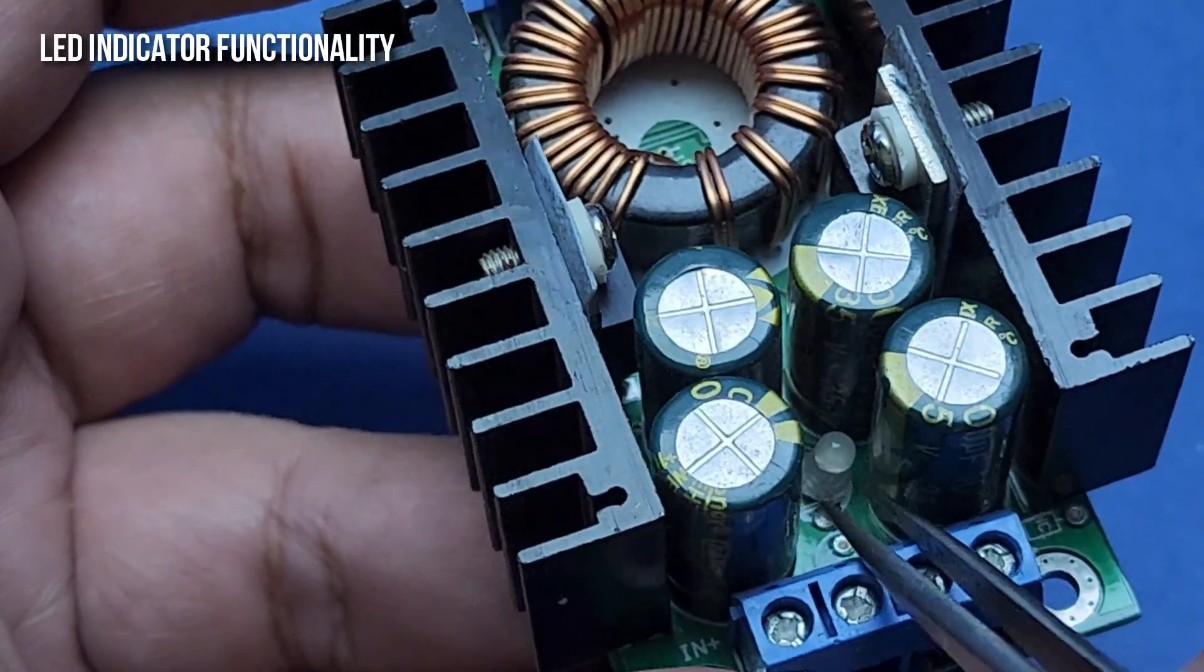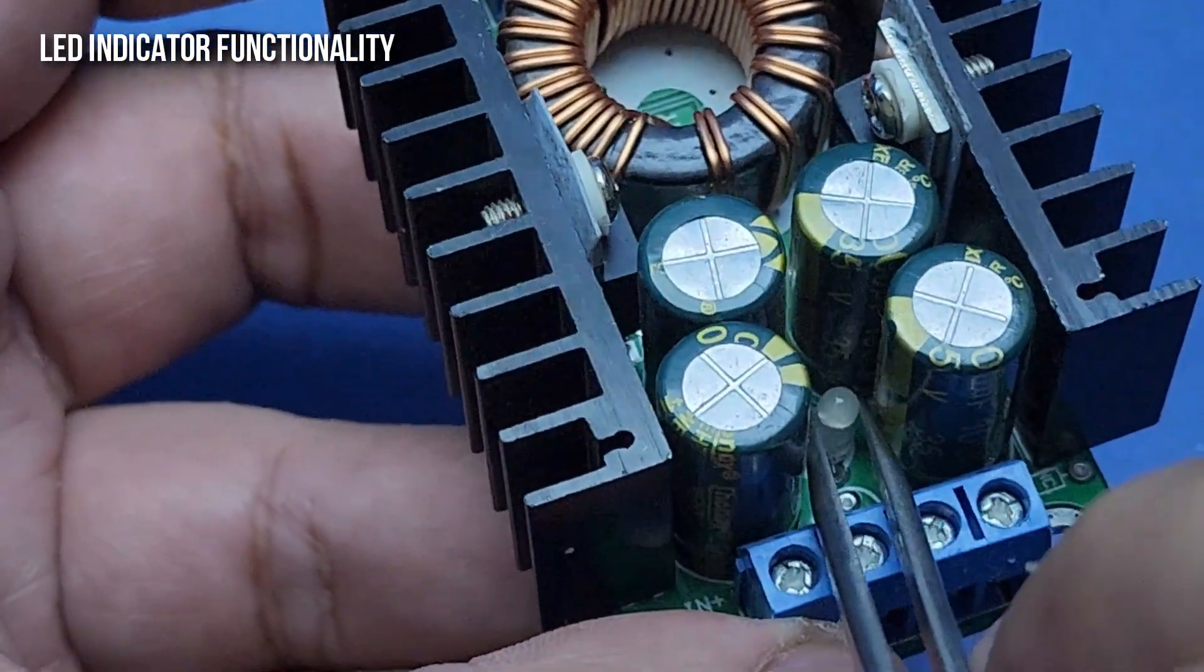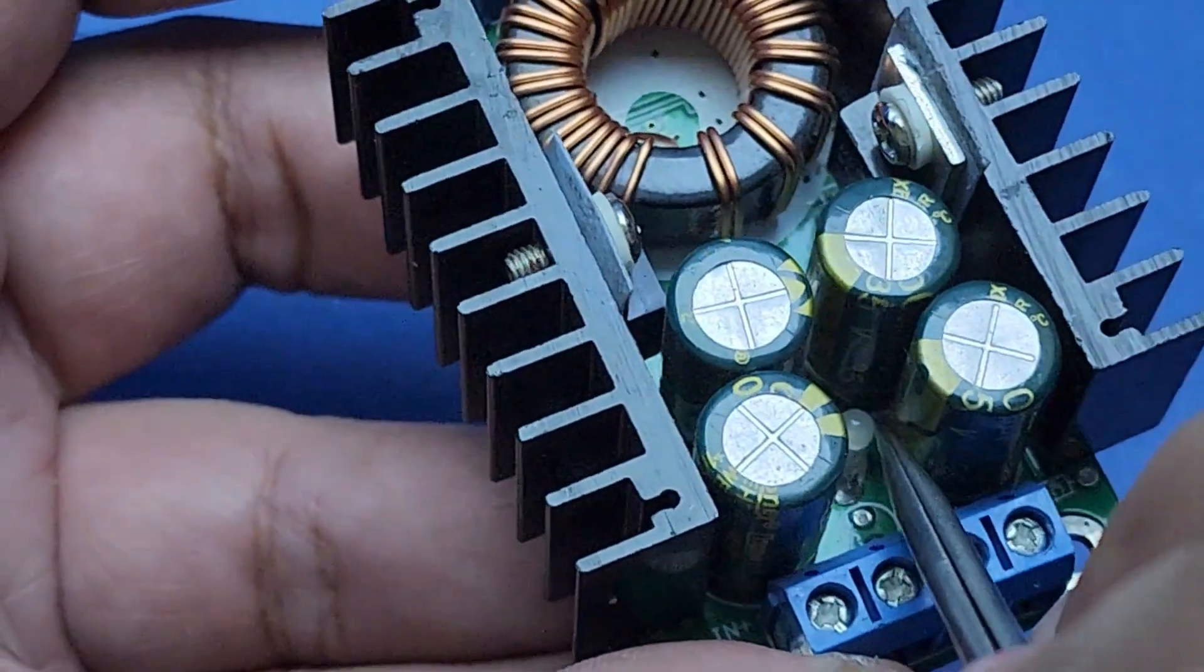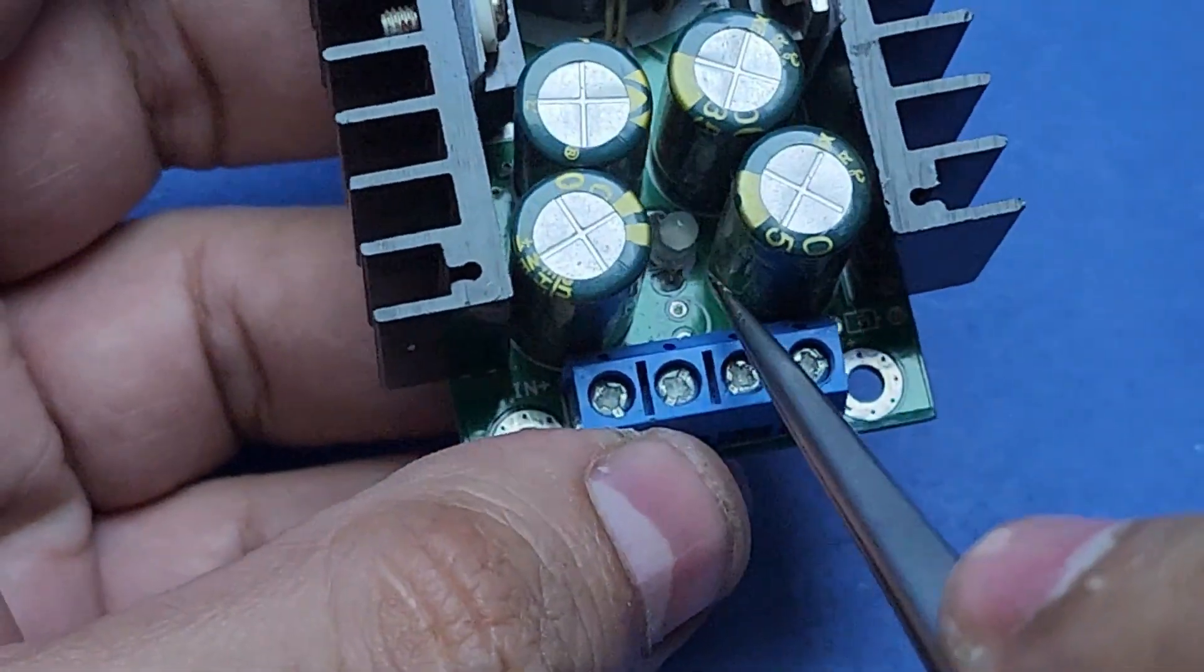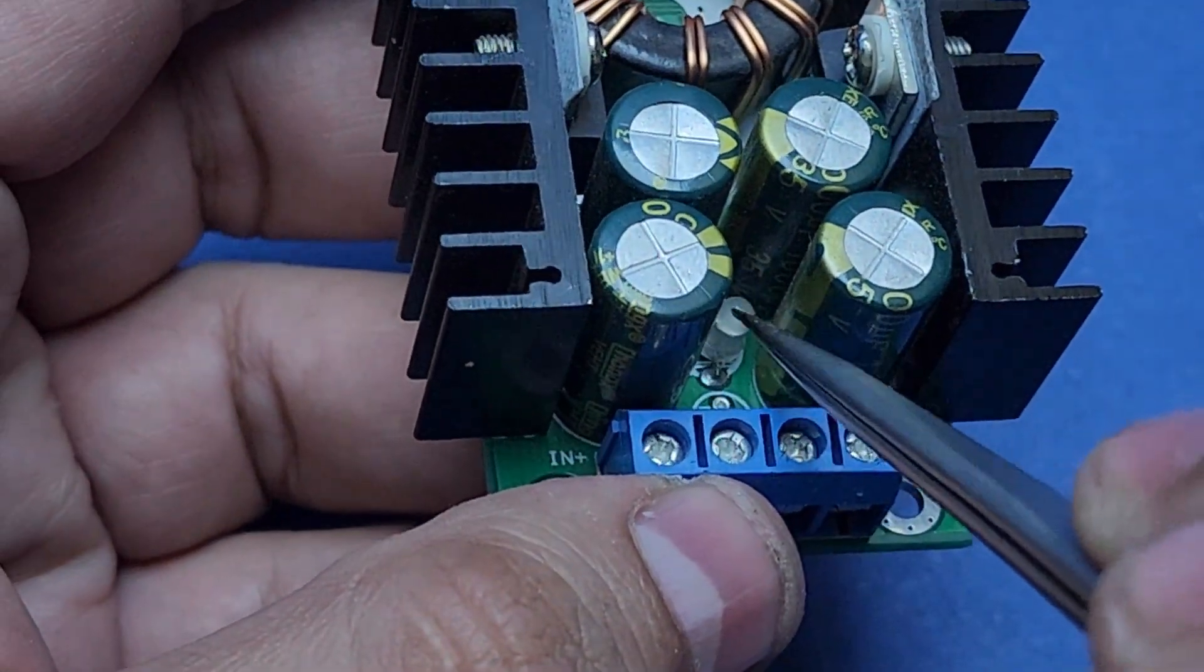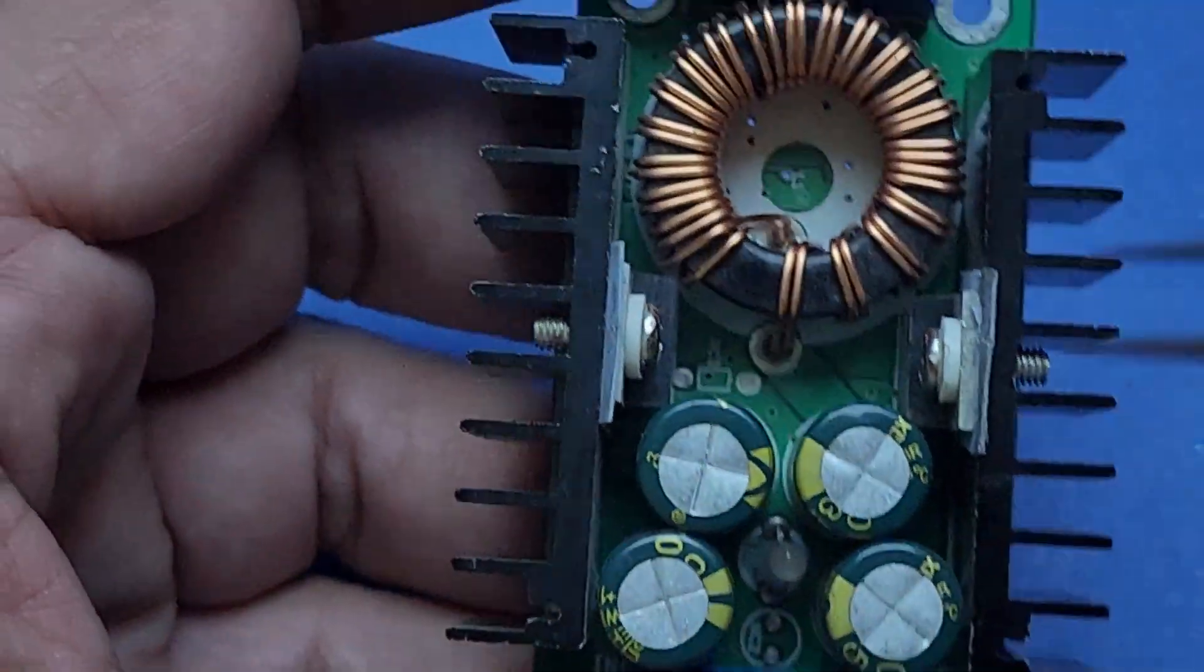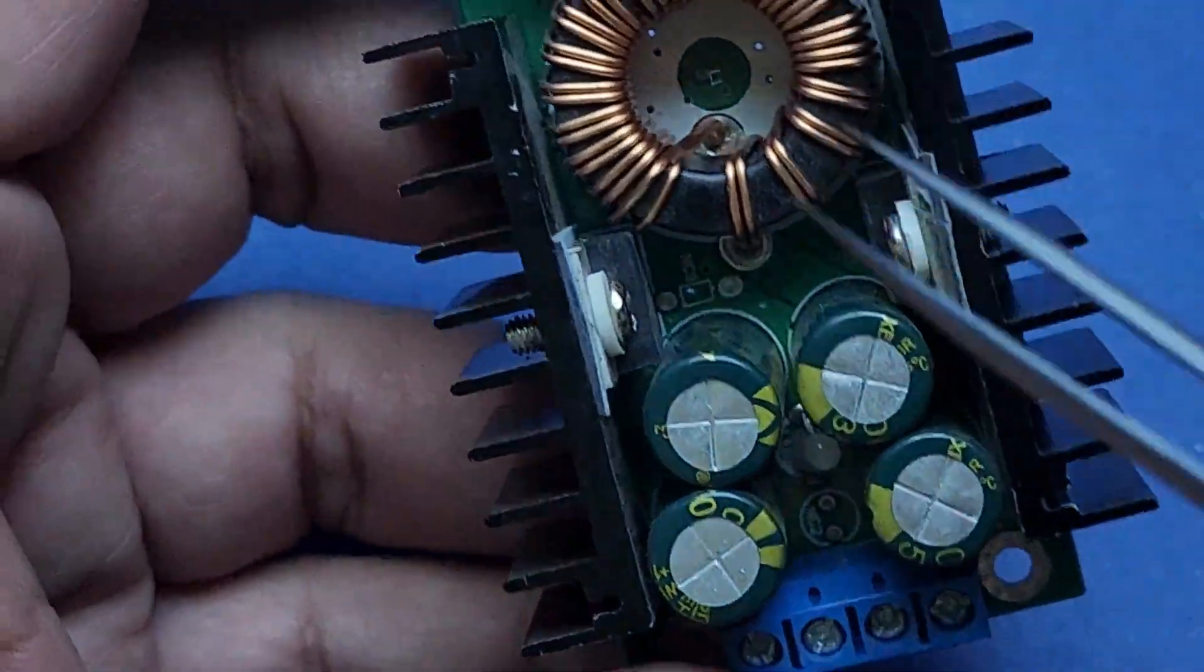There is an LED indicator present on this XL4016 module which indicates the power and load state of the module. In normal conditions the LED will glow blue, but if the module is overloaded and the current limit is being applied, then the LED will turn red.